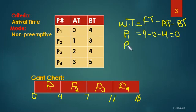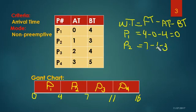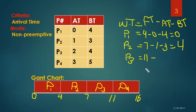The waiting time for P2: the finishing time for P2 is 7, the arrival time is 1, and the burst time is 3. So 7 minus 1 minus 3 equals 3. For P3, the finishing time is 11, the arrival time is 2, and the burst time is 4. So 11 minus 2 minus 4 equals 5.